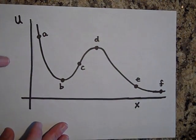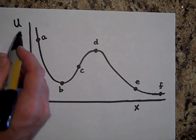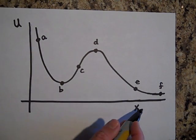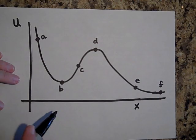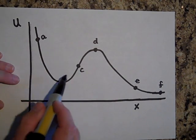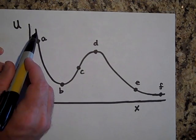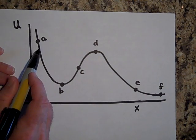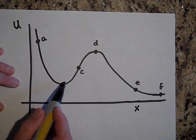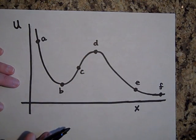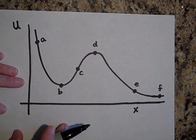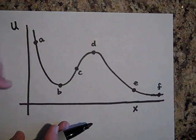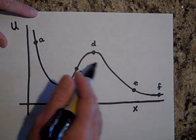Now suppose you had a graph of potential energy for an object as you move it along the x-direction on a number line. As you move it along, the potential energy starts out really high, goes low, goes up again, and then goes low again. There are definitely systems that behave like this, but for now let's not detail where this graph is actually coming from.